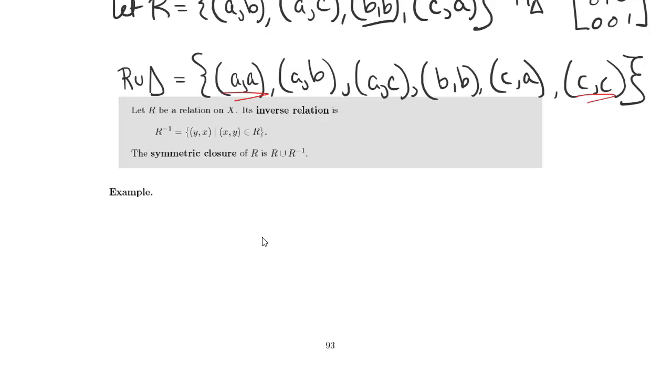So for any relation R, its inverse relation is the one where I flip all the pairs. So any pair X, Y in R is going to get turned into a pair Y, X in the inverse relation. I want you to think about the use of the word inverse here. It is similar to how it's being used as a function.